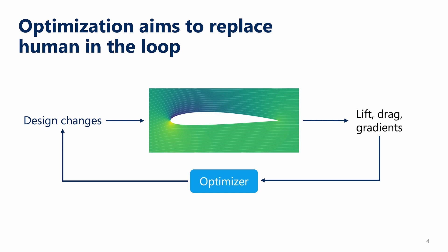Optimization aims to automate this process by replacing the human in the loop with a numerical optimizer. Instead of the flow field and lift and drag, the optimizer uses only scalar performance metrics, and in the case of gradient-based optimization, the derivatives of those metrics with respect to the design changes. There's no engineering intuition or best principles involved. Often it'll try to make unrealistic shapes — for example, airfoils with a very sharp leading edge.